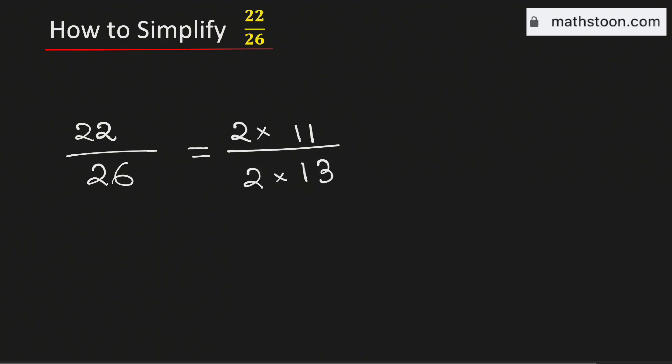Now we will cancel the common number 2, so it will be equal to 11 over 13.